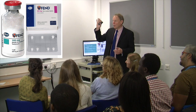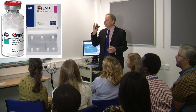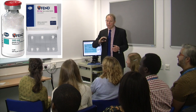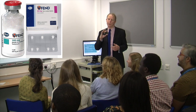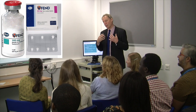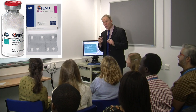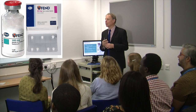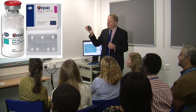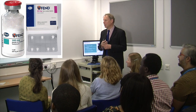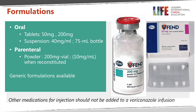Voriconazole is given orally or intravenously. There are both tablets and suspension — the suspension is useful for children and for people who can't swallow well. The intravenous formulation needs to be reconstituted, typically in multiple vials for loading doses at the beginning of therapy, and it's important that nothing else is added to the IV injection.